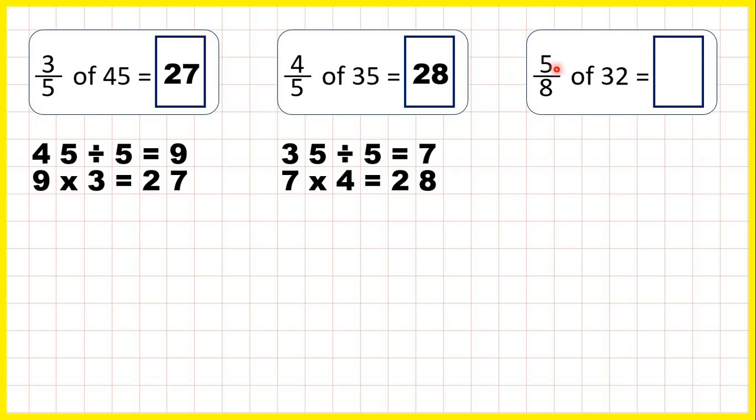Now find 5 eighths of 32. We start with 32 divided by 8, dividing by our denominator, that gives us 4, and then we take that 4 and multiply by the numerator. So times top. And 4 times 5 is 20. So 5 eighths of 32 is 20.